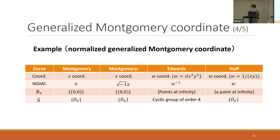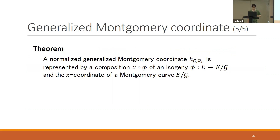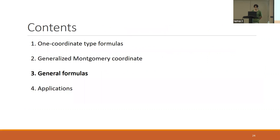Next I explain another aspect of the normalized generalized Montgomery coordinate. A normalized generalized Montgomery coordinate h_{G,r₀} can be represented as a composition of the x-coordinate of a Montgomery curve E/G and an isogeny phi from E to E/G. These are some further properties of the generalized Montgomery coordinate.